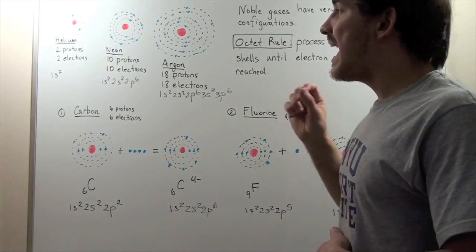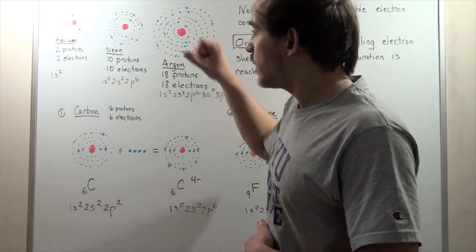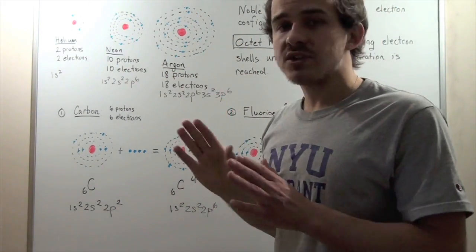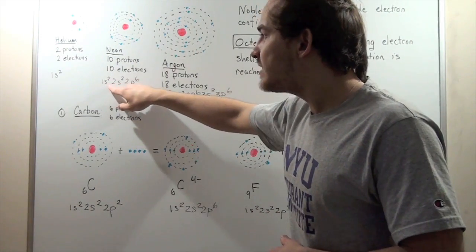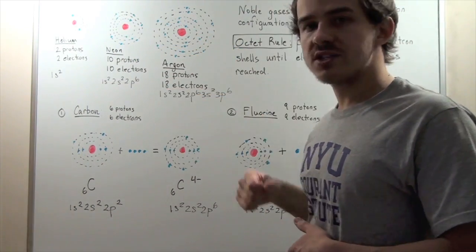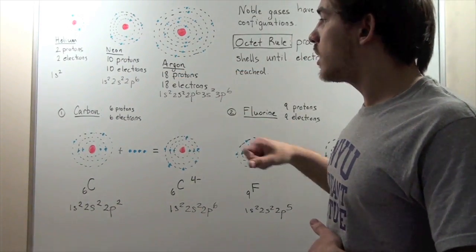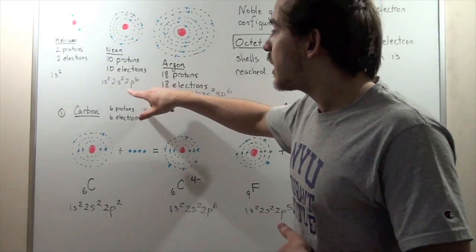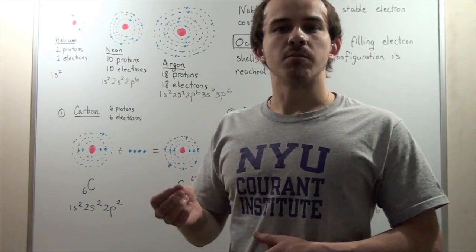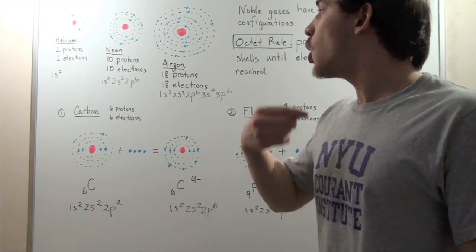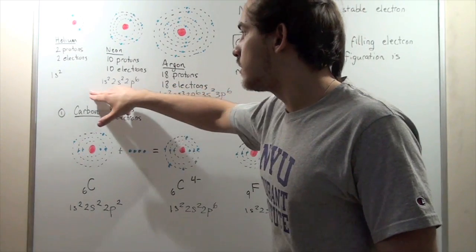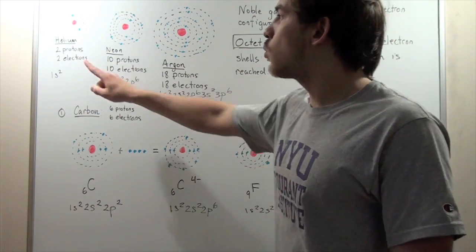Let's go to Neon. Neon has ten protons found in the nucleus and ten electrons found in the orbitals surrounding the nucleus. Our electron configuration for Neon will be 1s2. Two electrons will be in the 1s orbital, two electrons will be in the 2s orbital, and six electrons will be in the 2p orbital. Remember, there are actually three p orbitals — px, py, and pz — and each orbital can hold a maximum of two electrons, giving a total of six electrons in our p orbitals. So once again, all orbitals within Neon are completely filled, just like they were in Helium.